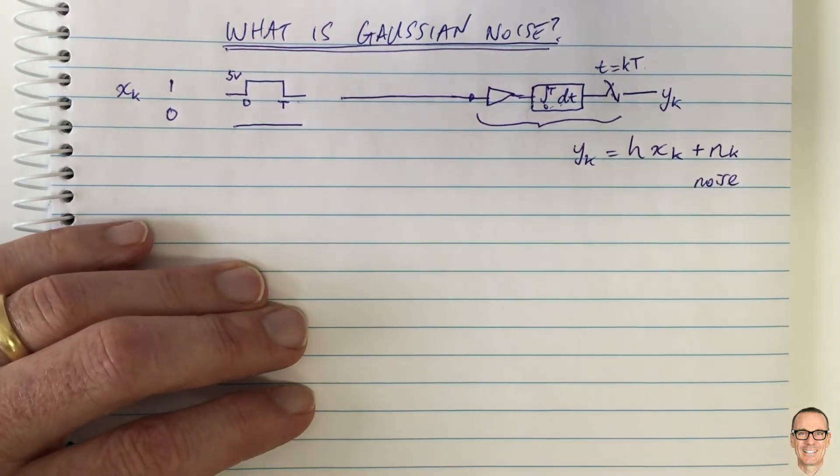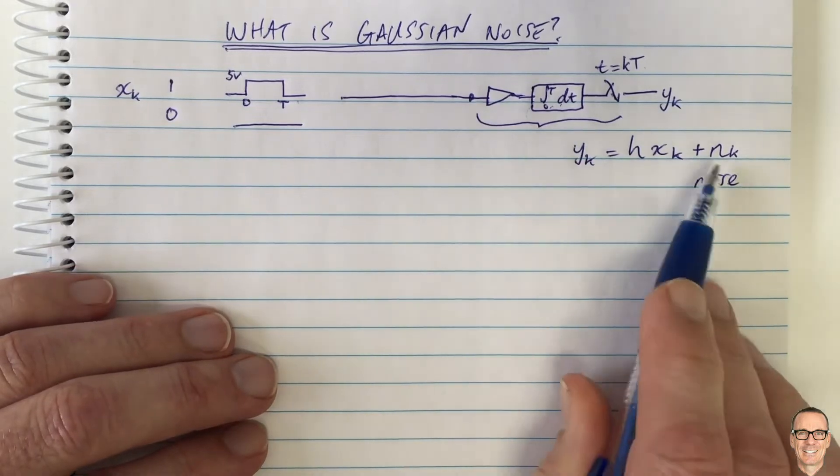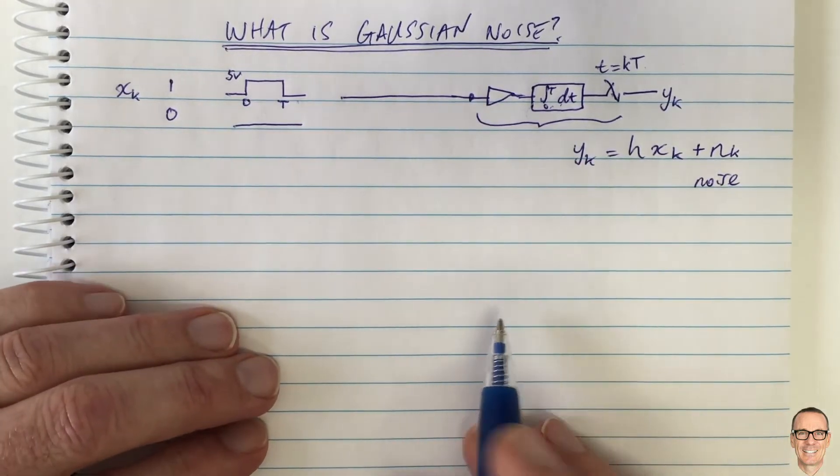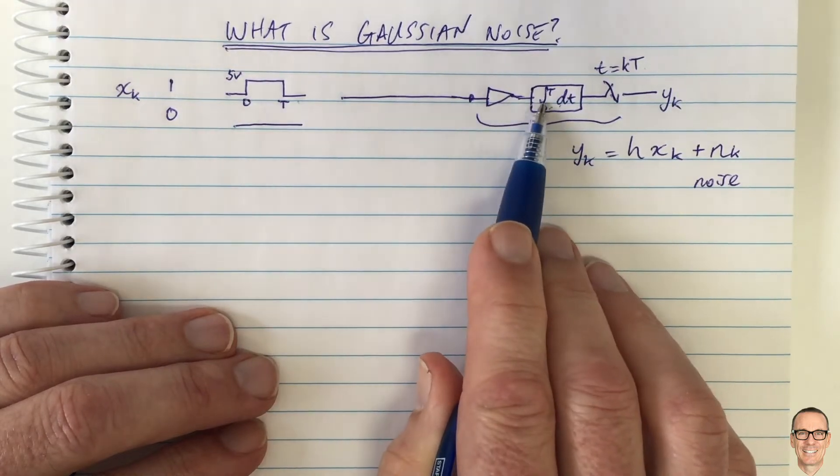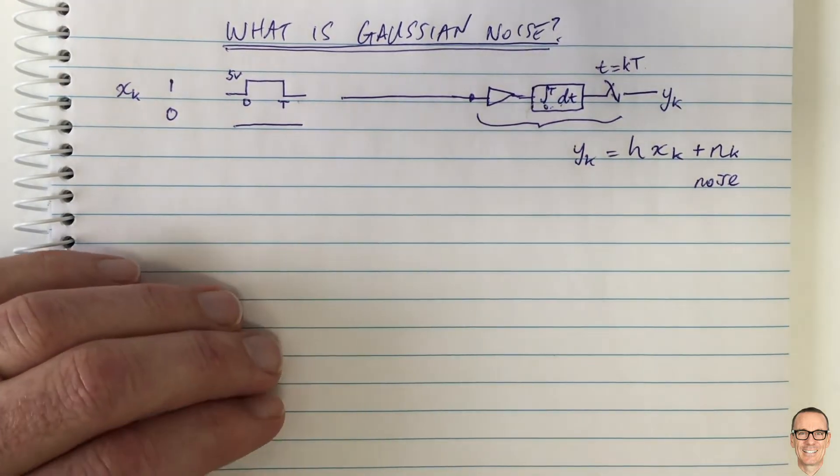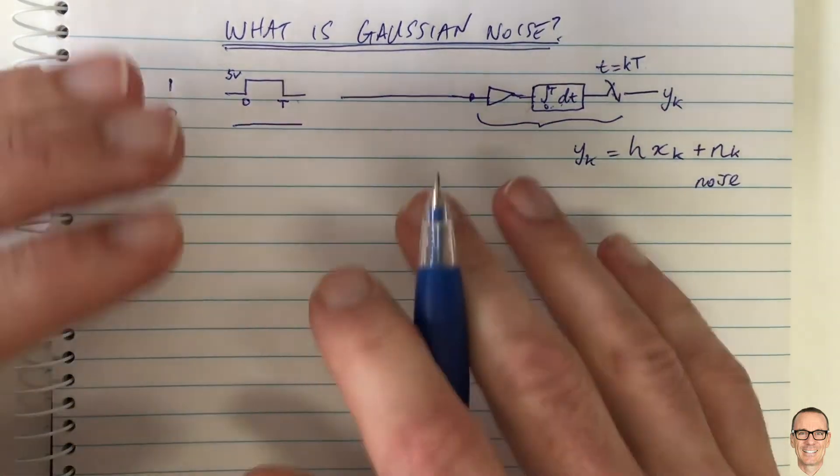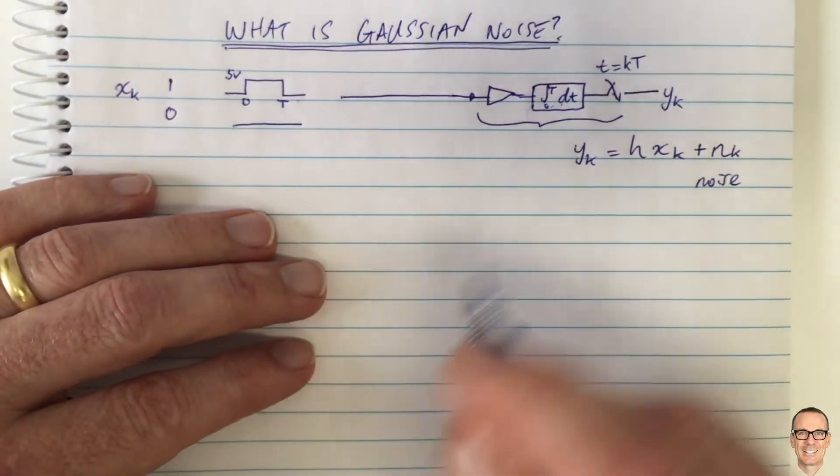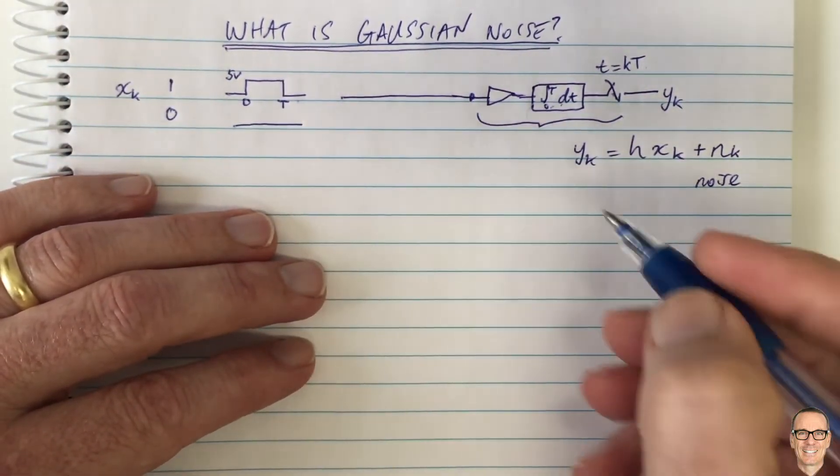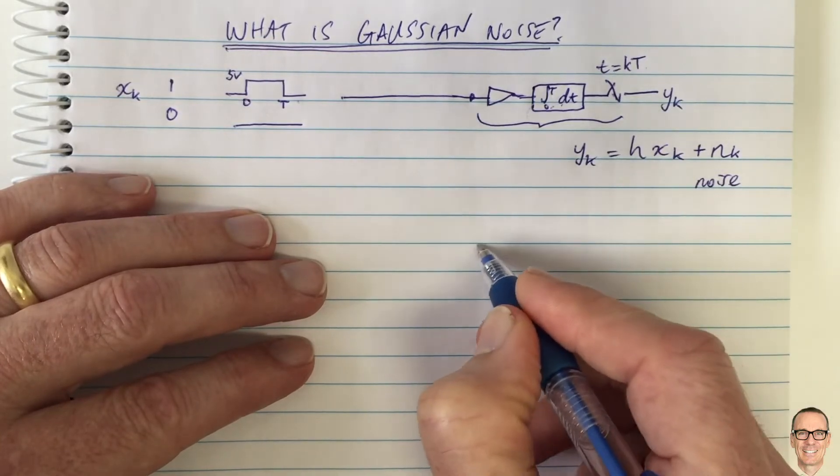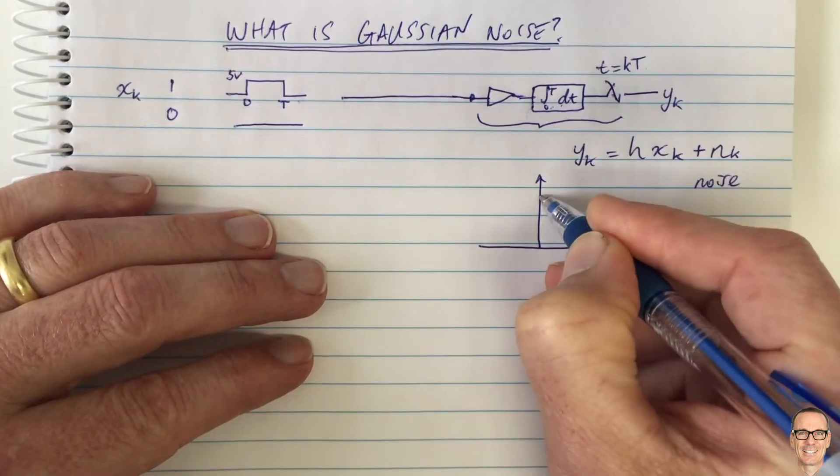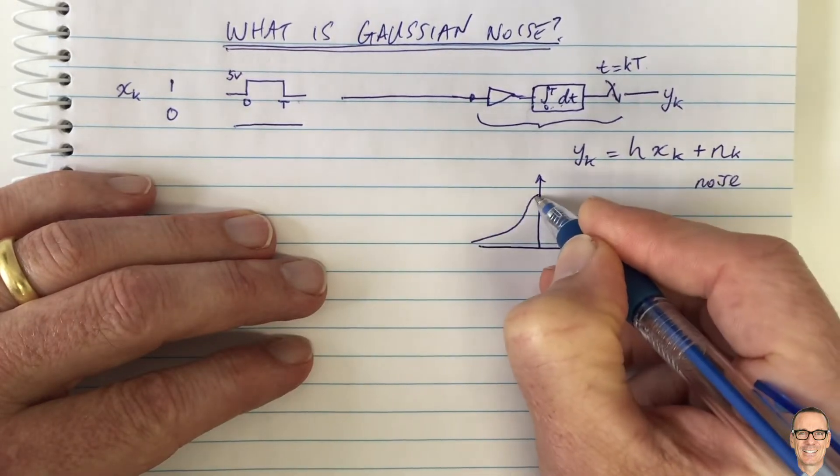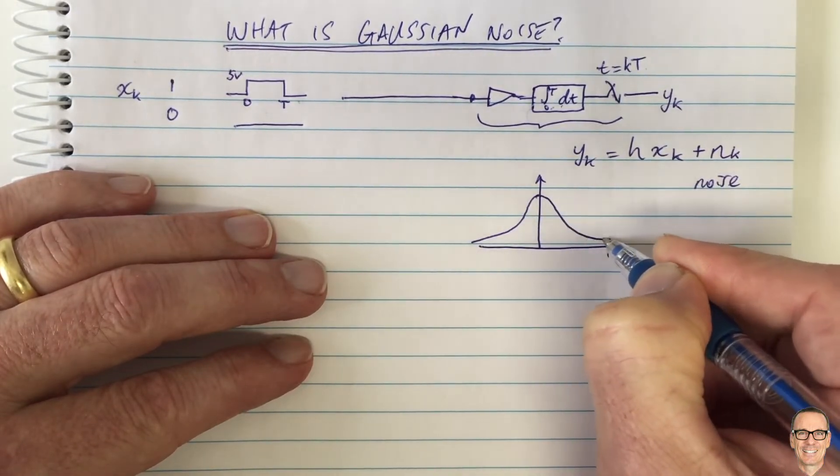Okay, so what about Gaussian noise? What is Gaussian noise? Or why is this noise Gaussian? Well, all of these electrons, there's many, many, many electrons in there. And there's a result in mathematics that says that if you add the effect of lots of random things together,